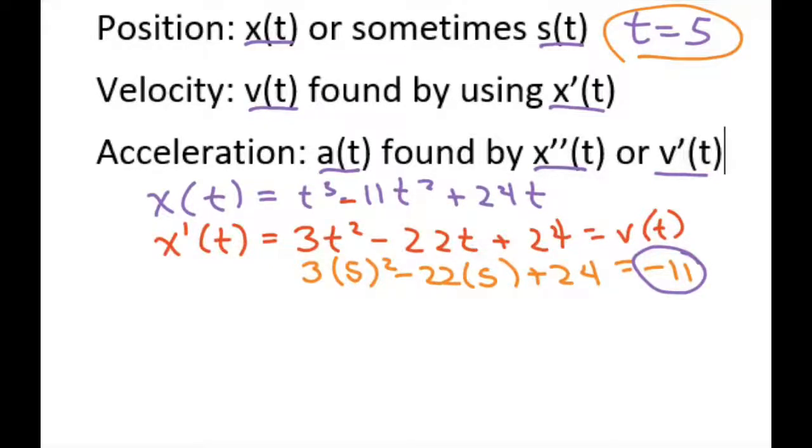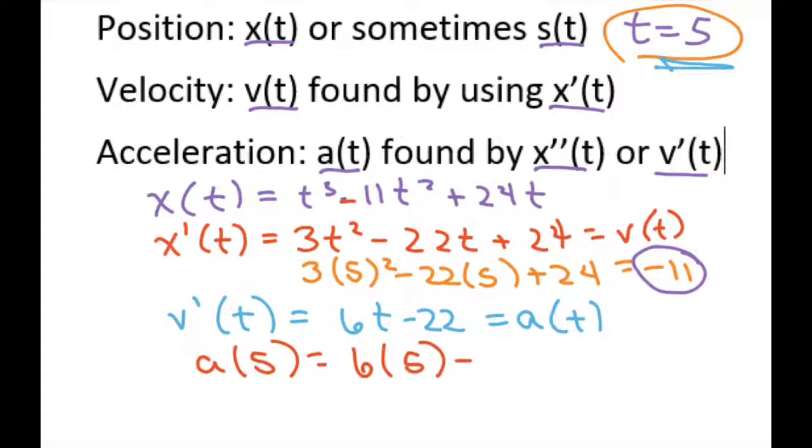The next thing we have to do is find the acceleration. So we're going to take the derivative of our velocity, and that's going to end up being 6t minus 22 equals your acceleration of t. Again, we're going to plug in t equals 5. So a of 5 equals 6 times 5 minus 22, which equals 8.